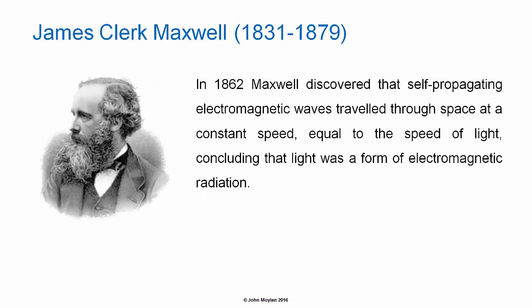James Clerk Maxwell. In 1862, Maxwell discovered that self-propagating electromagnetic waves traveled through space at a constant speed, equal to the speed of light. And he concluded from this, that light was a form of electromagnetic radiation.